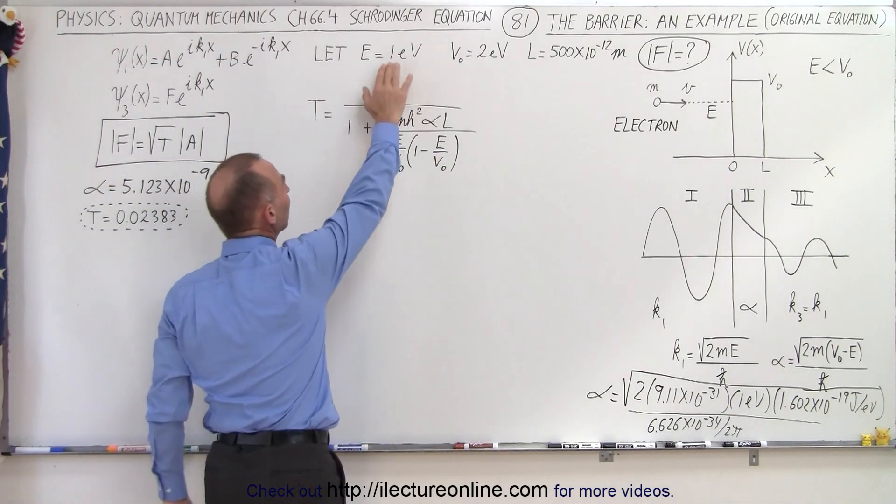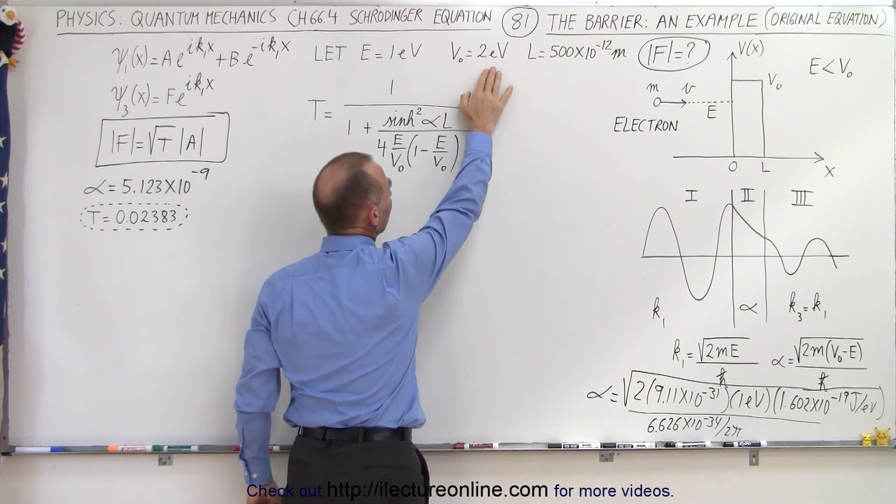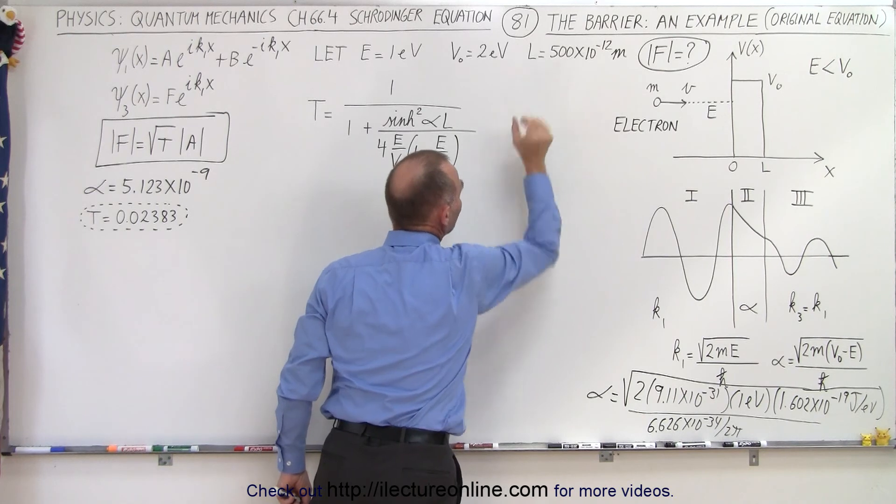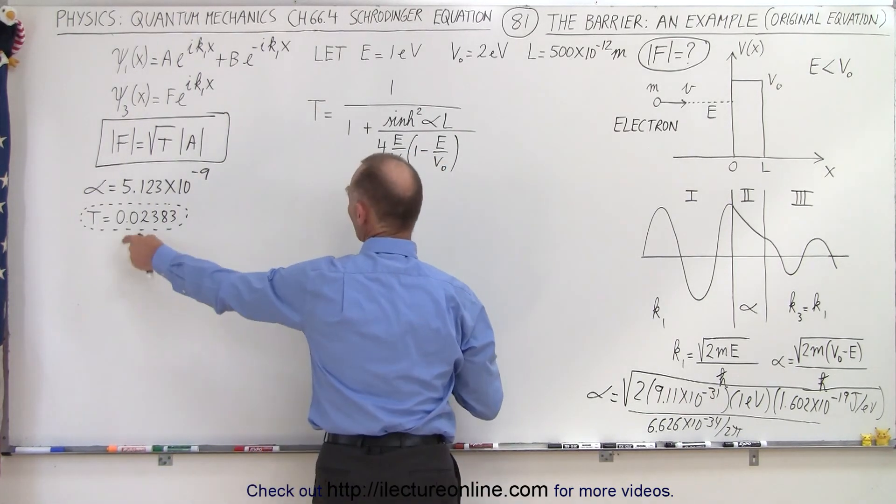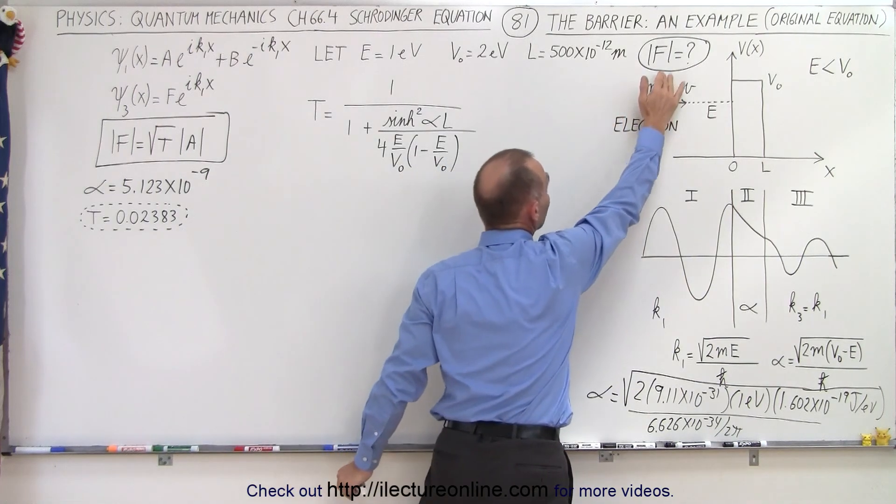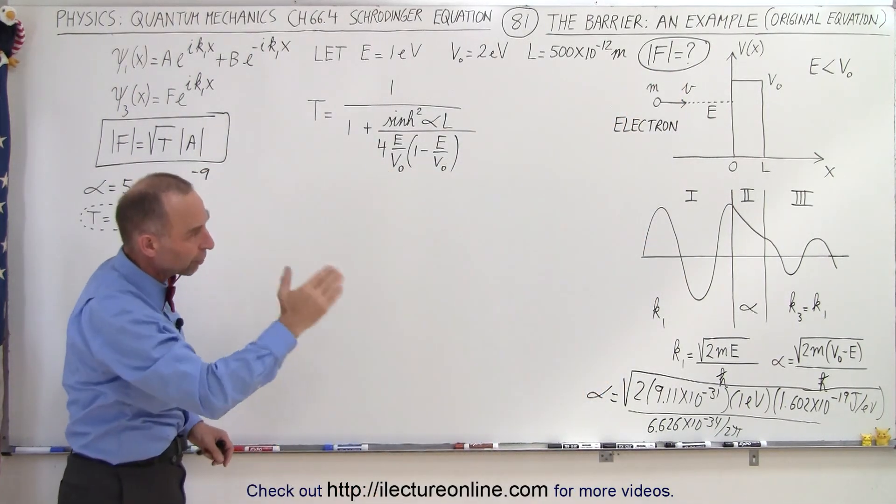If we take the energy of the particle to be one electron volt, the potential of the barrier to be two electron volts, the width of the barrier being 500 picometers, we're trying to find the transmission coefficient in such a way that we can calculate the amplitude of the oscillations of the particle on the right side of the boundary.